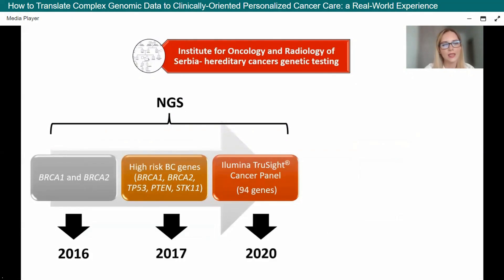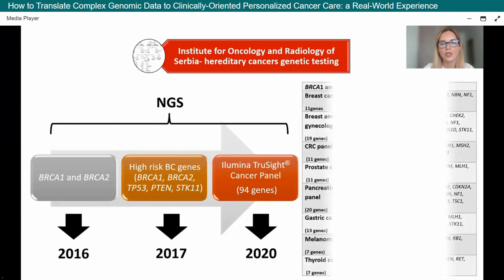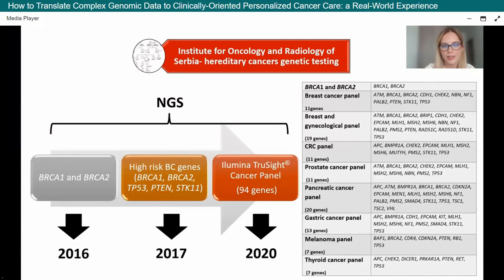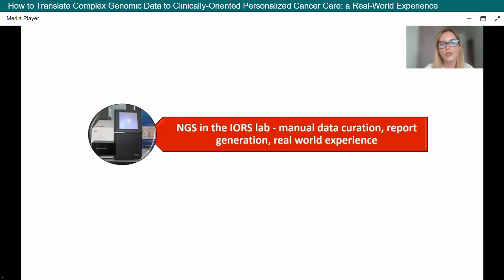Since 2016, we've progressed from BRCA1/BRCA2 only, to a smaller high-risk breast cancer gene panel, and now the Illumina TruSight Cancer Panel — though we're considering switching. We can now offer customizable panels for different hereditary cancers. For tests not covered by insurance, patients can pay out of pocket. This brings me to how we perform manual data curation — past and present — and how software has changed that process.